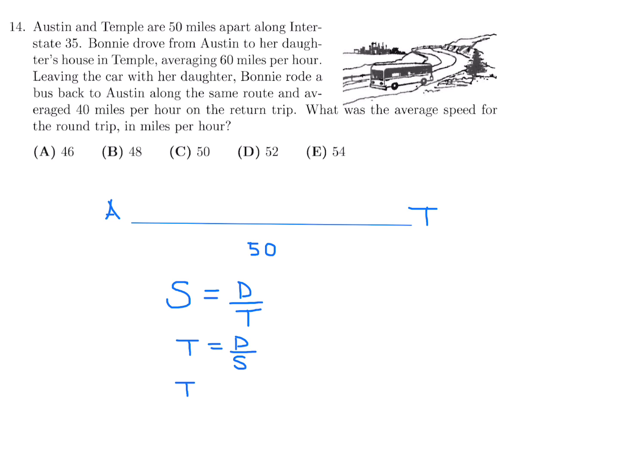So on the journey to Temple, it's 60 miles per hour. Speed is equal to distance over time, so time is equal to distance over speed. So that first one, the time will be the distance is 50 and the speed is 60 miles per hour. On the way back, same kind of story. The time will be distance over speed. But this time the distance is also 50. But the speed is not the same because she's taking a bus. So now this is 40. So in lowest terms, this is 5 over 6 and this is 5 over 4.